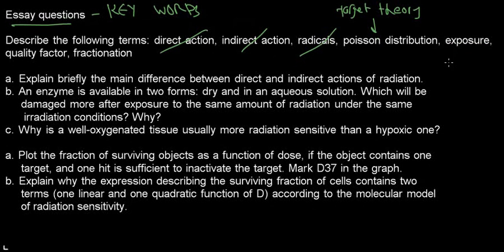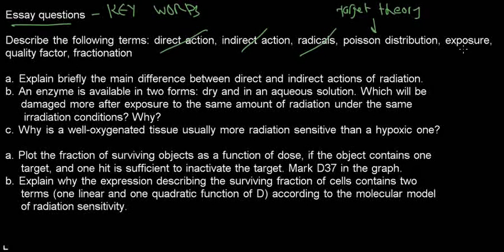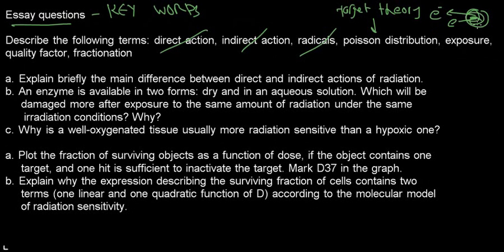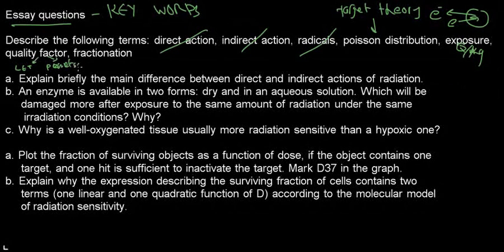Exposure: I would define it as the total positive or negative charges generated by ionizing radiation in a body per unit mass during electron equilibrium — meaning the number of electrons entering the material equals the number leaving, and we can measure the change in charge. Its units are coulombs per kilogram. Quality factor: it characterizes the extent of biological damage that ionizing radiation can have on biological systems, with key factors including LET and penetrability.